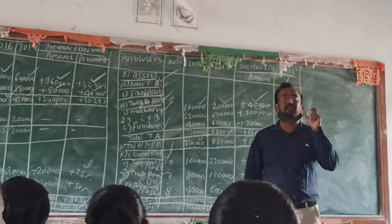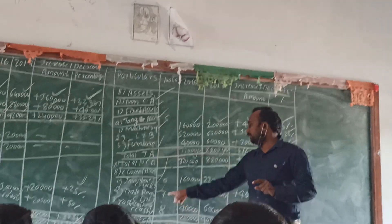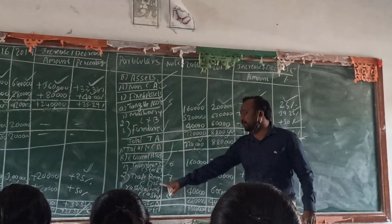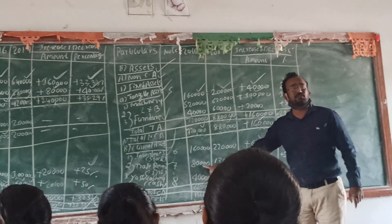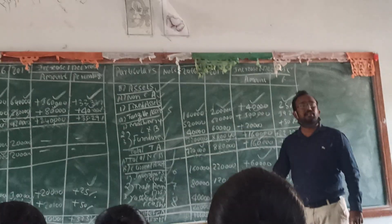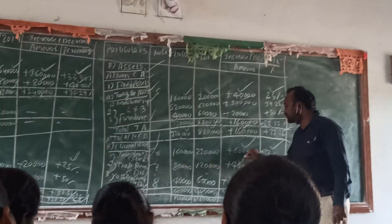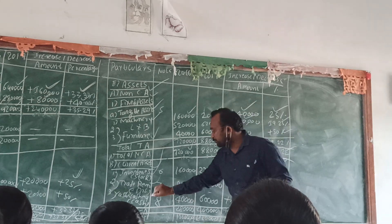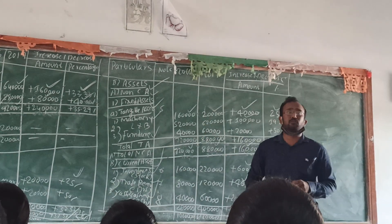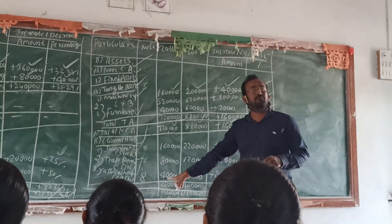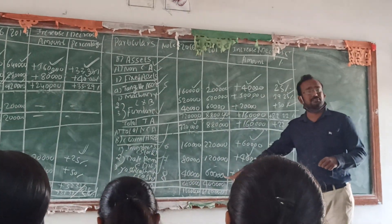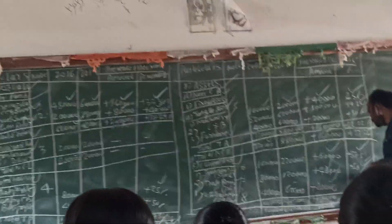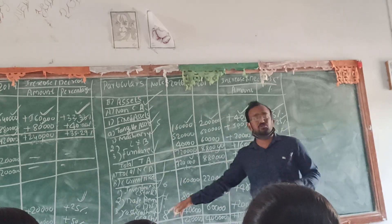The second current asset is trade receivables. The difference amount is 40,000 and the percentage is 50%. The last current asset item is cash: first year is 2,80,000 and second year is 60,000. The difference amount is 20,000 and the percentage is 50%.